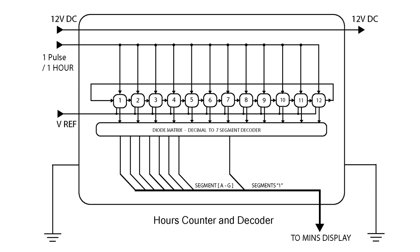The hours counter module is identical to the others with the exception that it counts to 12 and has a decoder for the 1 on the 10, 11, and 12 count. This illuminates the 1 in front of the other digits.